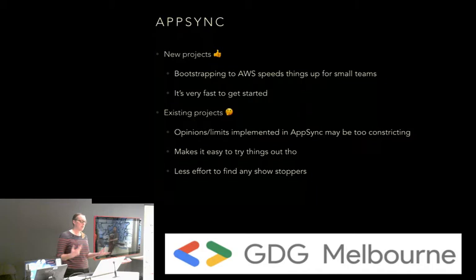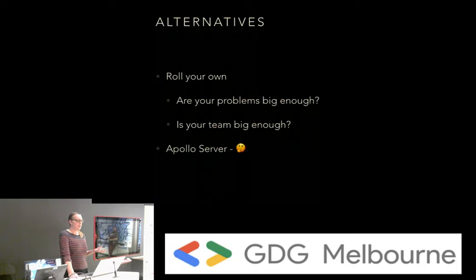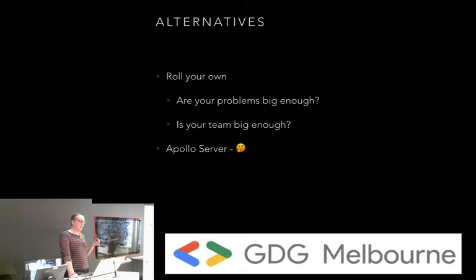What are those alternatives? You can roll your own GraphQL server — I'd ask, are your problems big enough for that, is your team big enough? And then there's Apollo Server, a competitor — that's managed GraphQL on Apollo. A lot of the AWS technology is actually built on Apollo, so maybe you'll have the same problems. Not sure.